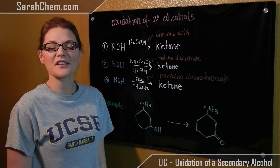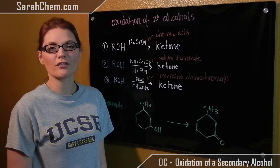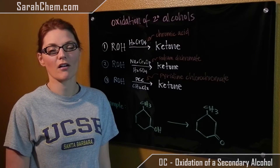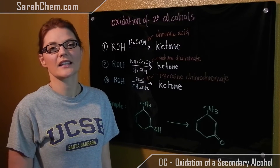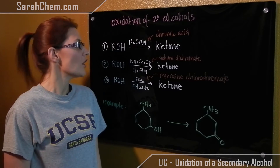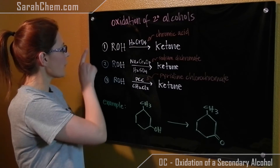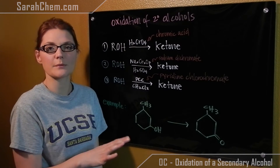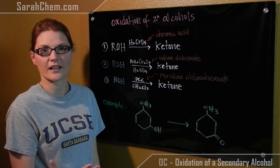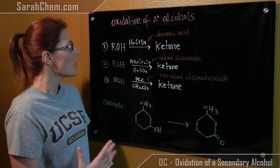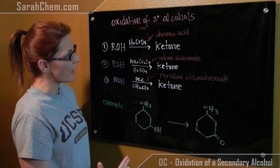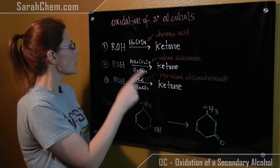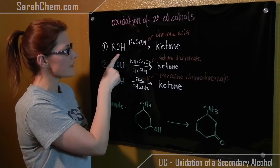Hi everyone. This is a video tutorial for the oxidation of secondary alcohols that would produce a ketone. In this case, we're going to look at three reactions for which there are no mechanisms that we're going to actually take a look at. In each and every case, we're always going to be producing a ketone.